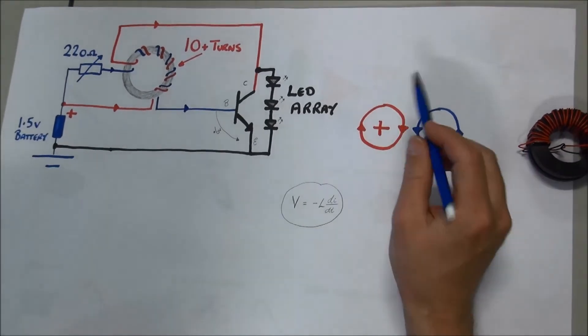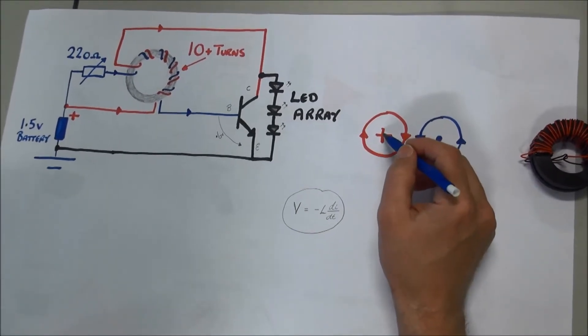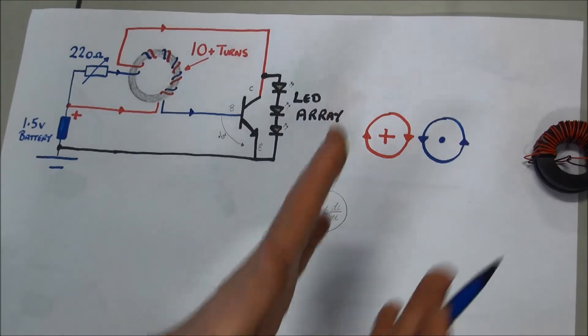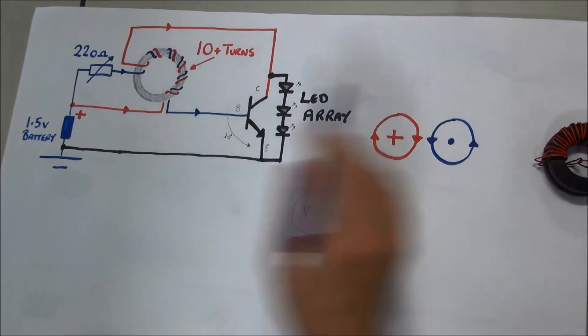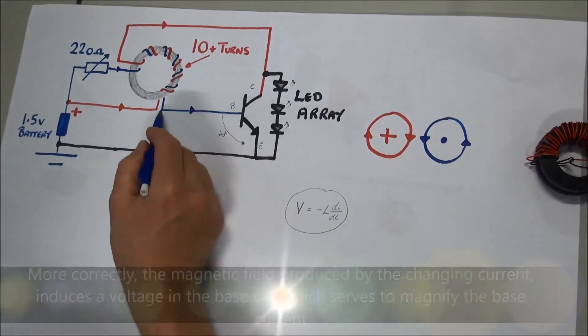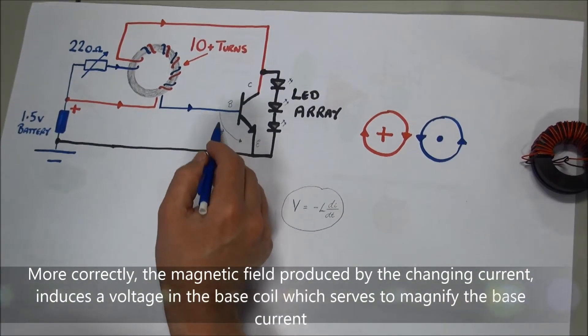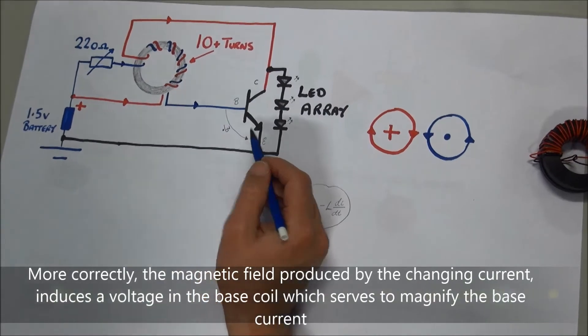What happens is because the currents are flowing in opposite directions, the magnetic field of the induced voltage aids the base voltage here and causes a transistor to switch on very rapidly, so we get a surging current as the transistor switches on.